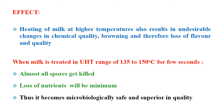Now we will see the effect of UHT processing. Heating milk at higher temperature results in undesirable changes in chemical quality, browning, and therefore loss of flavor and quality. Higher the temperature, the more this impact. But when milk is treated in the UHT range of 135 to 150 degrees Celsius for a few seconds, generally 1 to 2 seconds, the exposure time is very short, so the negative effects will be very less. Almost all spores get killed and loss of nutrients will be minimum because the exposure is very short even though the temperature is very high. Thus it becomes microbiologically safe and superior in quality.